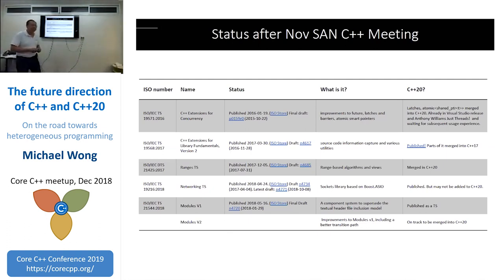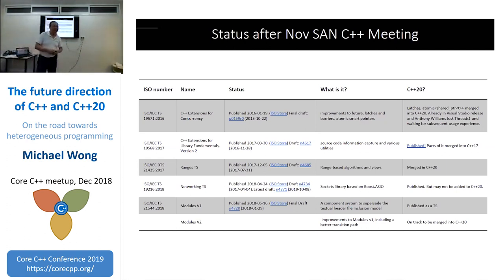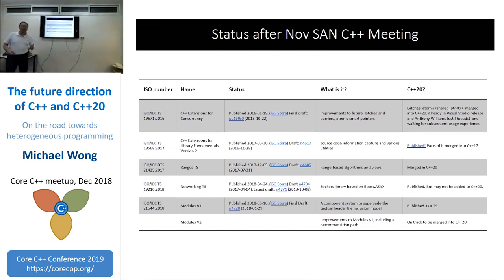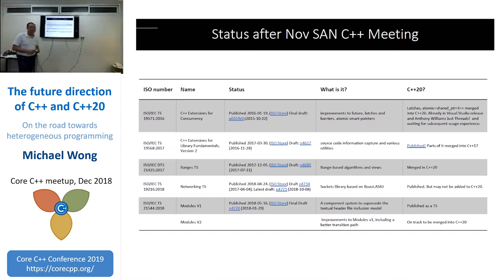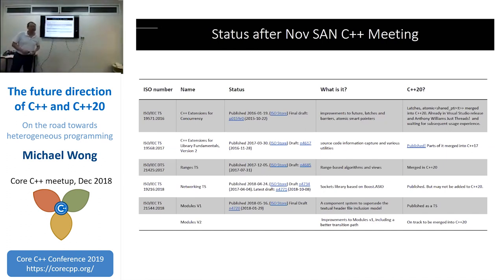When will we have coroutines, and do we still need the future dot-then continuation? You could actually do some of that using coroutines — there are papers that try to simulate that kind of then-continuation with coroutines. But right now coroutines are uncertain about making it into C++20. Once we have coroutines, the future dot-then may not be necessary.